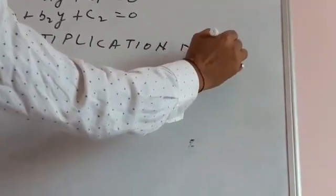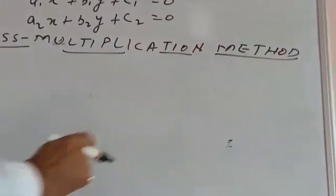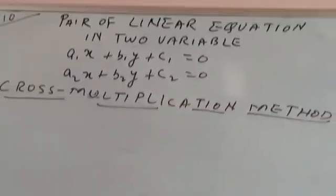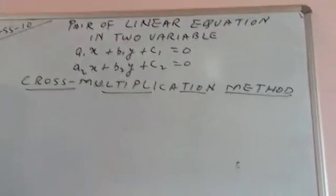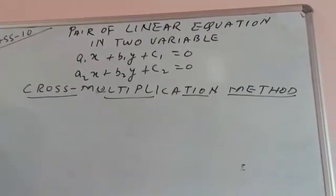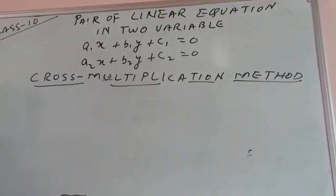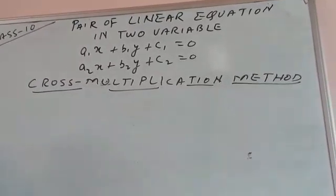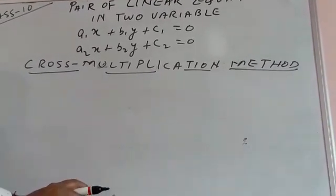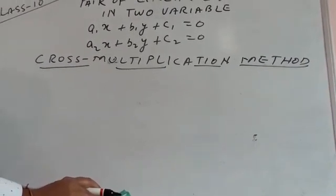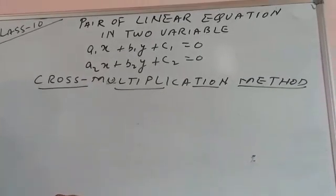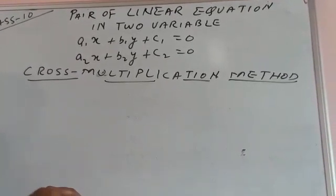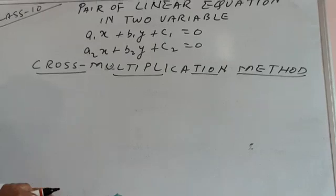This is one of the algebraic methods and it is most suitable for solving a pair of linear equations in 2 variables that has a unique solution. For using any method, I always advise you to check which condition is being followed. The cross multiplication method is used to find the unique solution for x and y, and it is also called an algebraic method.